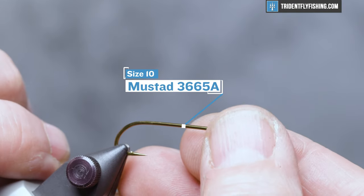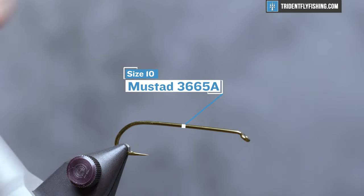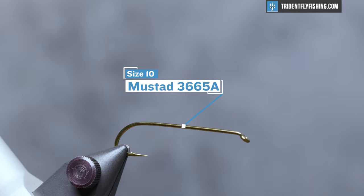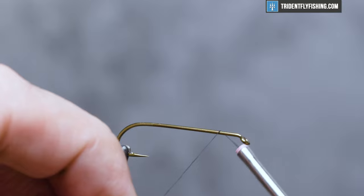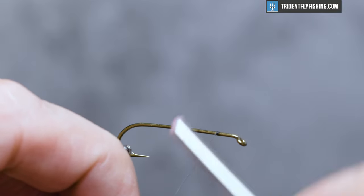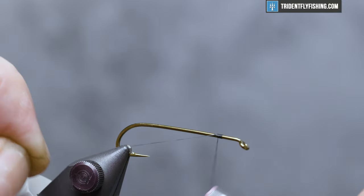So the hook we're going to use today is a Mustad 3665A. That's an extra long streamer hook and our thread today is going to be UTC 70 denier in black. We'll start our thread about an eye length and a half behind the hook eye and run back to the bend.